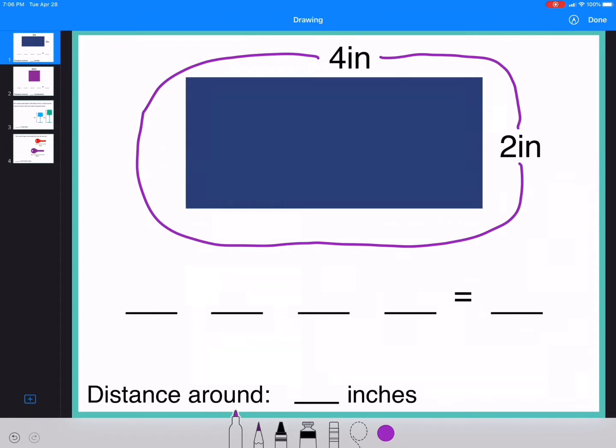In this case, they have given you that this side is 4 inches and this side is 2 inches. We have to think about what we know about a rectangle to figure out the other two sides. So if this side is 4 inches, that means this side is 4 inches because I know that the sides across from each other in a rectangle are the same.